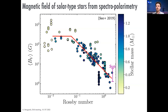We start to have strong constraints on the magnetism of stars. This is a plot made by Victor See in 2019 where he compiled many different observations using Zeeman imaging. You can constrain the surface field strength of stars as a function of the Rossby number — a measure of how much rotation influences the interior of a star. At low Rossby numbers of fast-rotating stars you see saturation in field strength. Typically we observe fields varying between a few Gauss to a percent of a Tesla for the large-scale field.